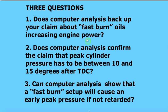It does show that fast burn oils can increase engine power — assuming different engine oils really do increase burn rate, which I'm pretty sure they do because when I switch to fast burn oils the timing has to be retarded to get the power back up. It confirmed that peak cylinder pressure is best around 15 degrees. The closer the peak got to 10 degrees, the higher the peak PSI, and if it goes too high you get detonation. And yes, it absolutely showed that a fast burn setup will cause an early peak pressure if the timing is not retarded.